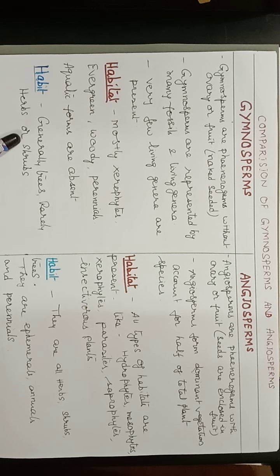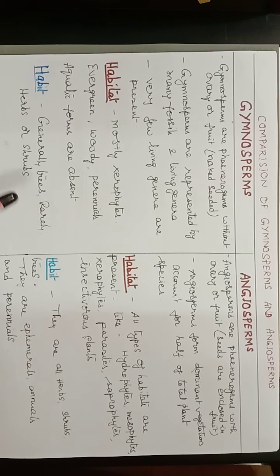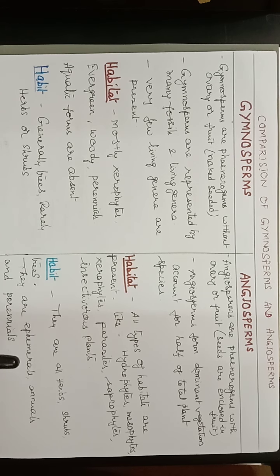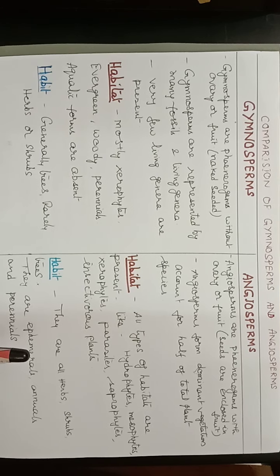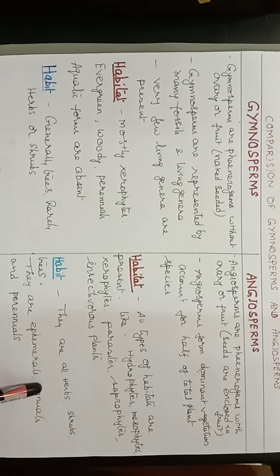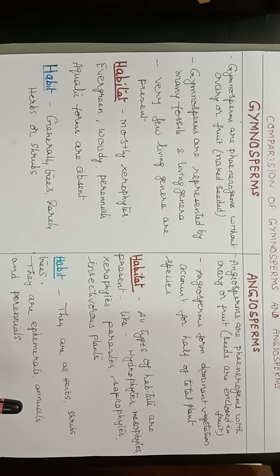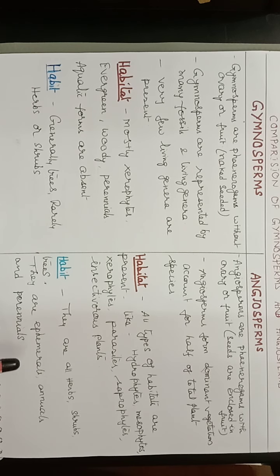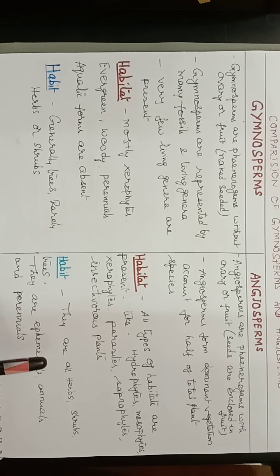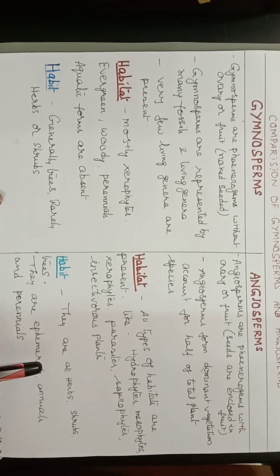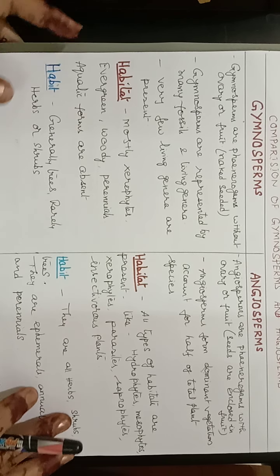Coming to habit: gymnosperms are generally trees and very rarely we may find herbs or shrubs. Whereas in angiosperms we find almost all types of habits — herbs, shrubs, trees, ephemerals, annuals, and perennials. So almost all types of different habits and habitats we find in angiosperms, which form the dominant vegetation on the earth.